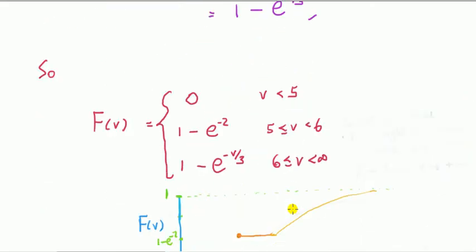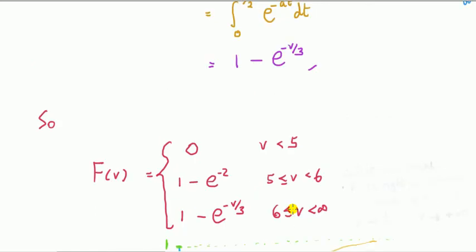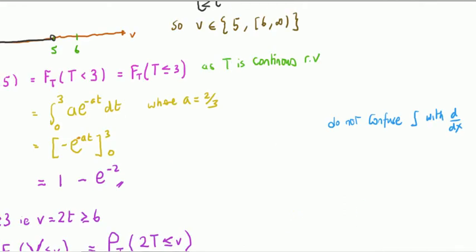Combining the answers, we write the CDF in three pieces: 0 for V less than 5, the first expression for V equal to 5, and the second expression for V greater than or equal to 6. Then let's go back and comment on what things can go wrong when doing this calculation.